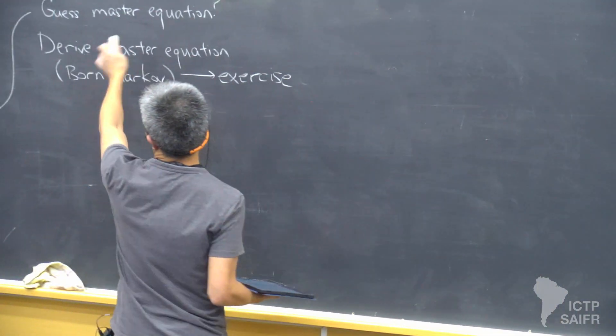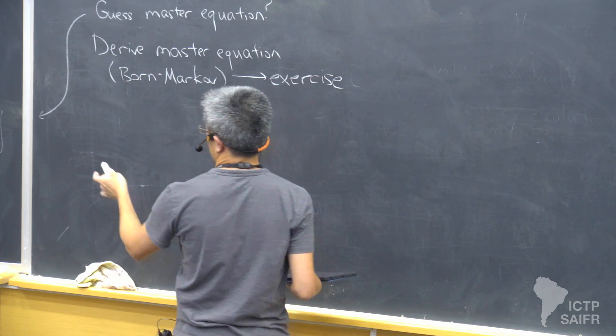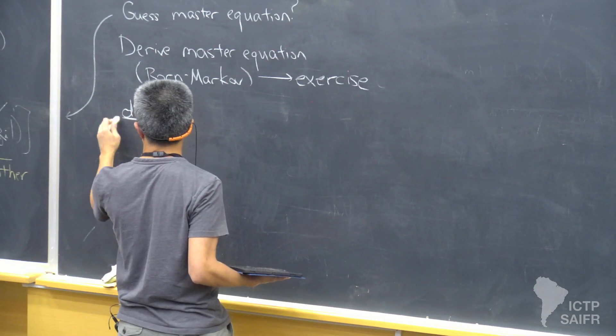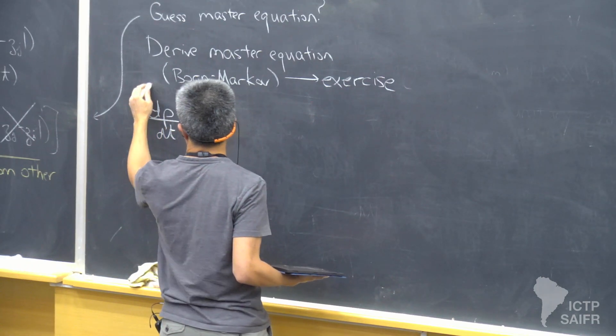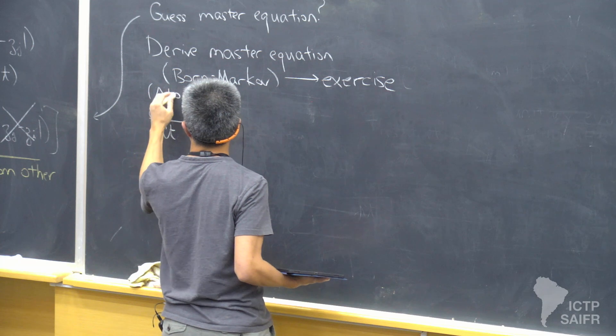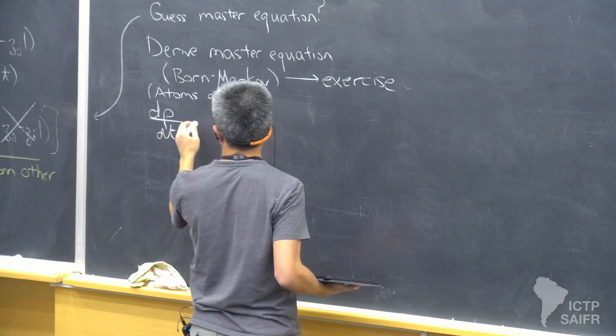So in either case, either by guessing or by doing this full derivation, what you get is that the corresponding master equation, once everything becomes local in time, is an equation for the atoms alone because we've integrated out the photons.